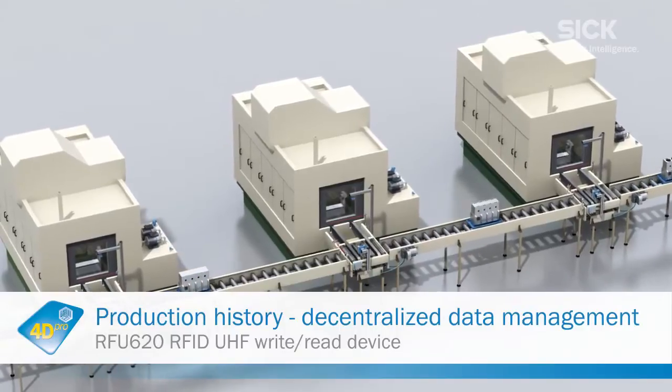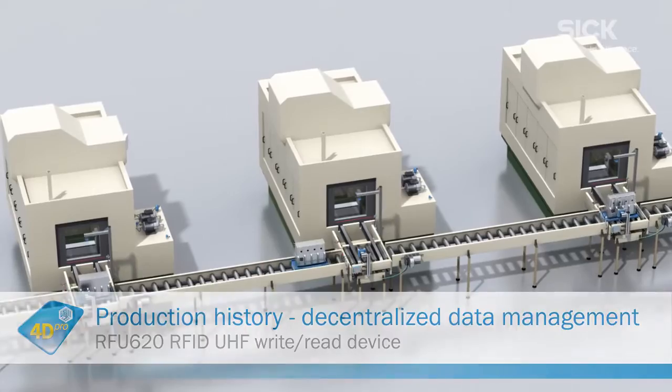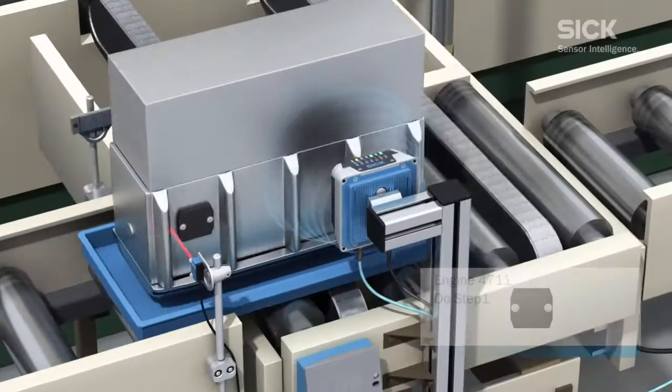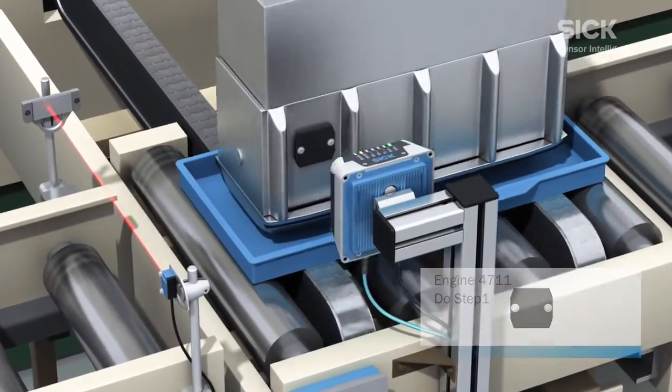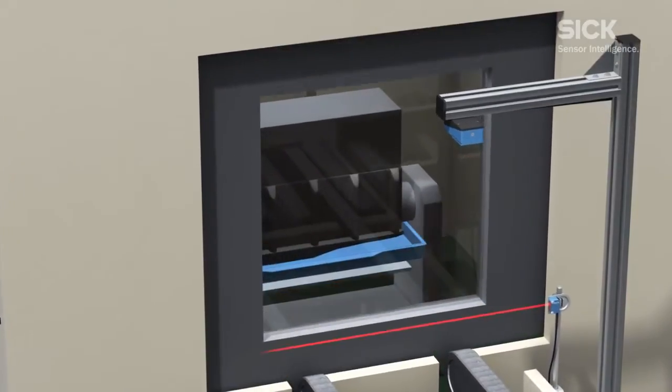The demand for increasing variety means that production lines must work with flexible production stations so that different products can be manufactured on a single line. The machines on the line must be able to complete a variety of tasks depending on the workpiece.